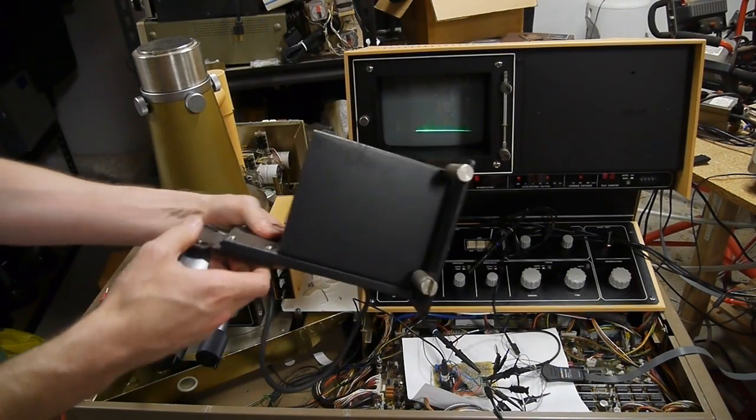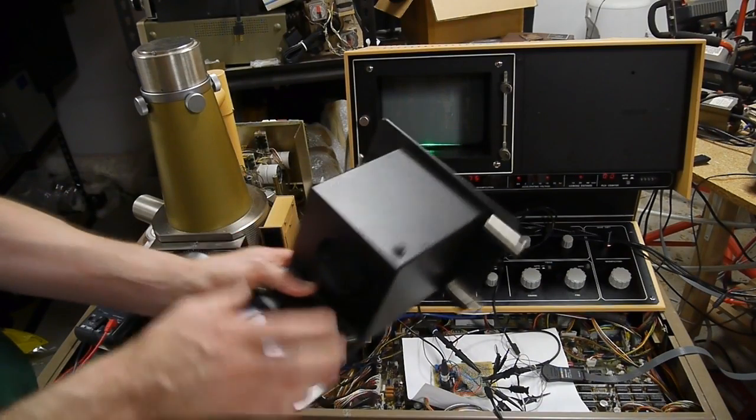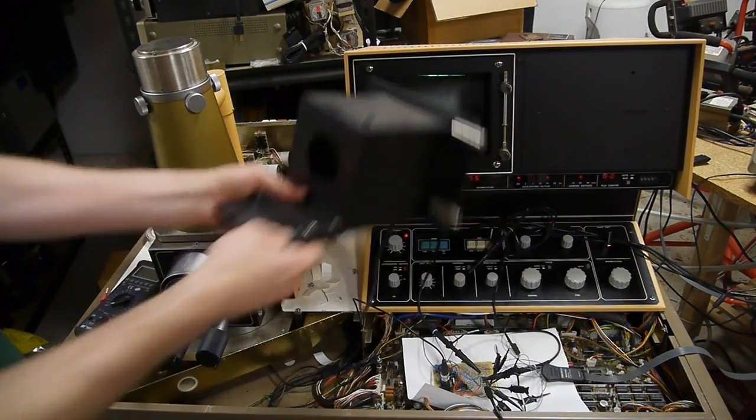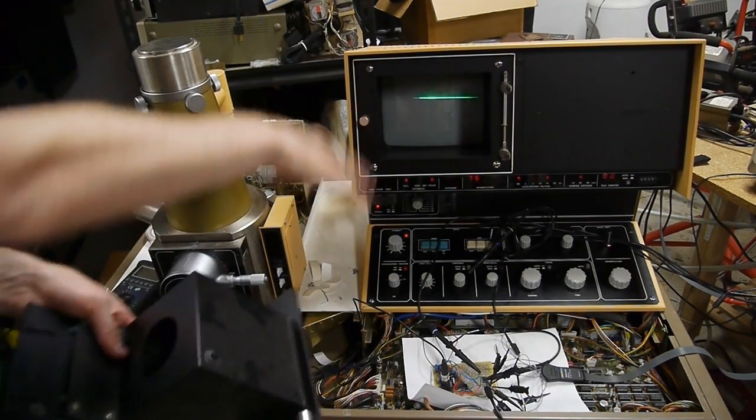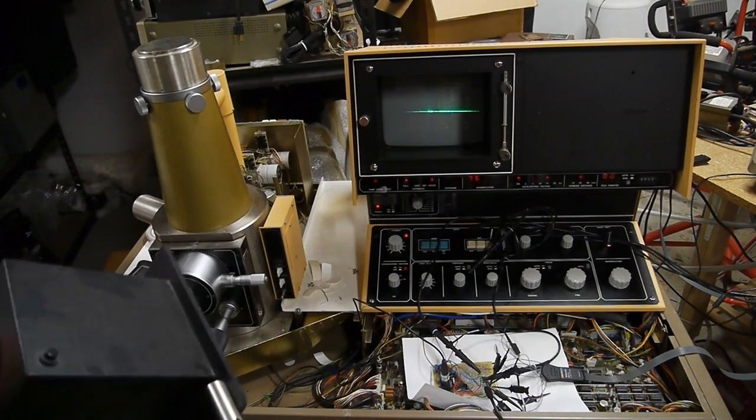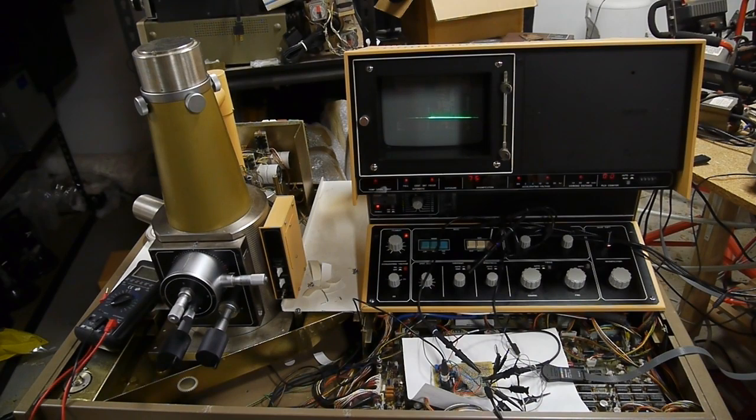Back in the day, the way you would actually make an image out of that is to hook up a Polaroid camera to this, mount it to the front of the screen, and let it expose the film a line at a time. But of course we have better technology now.